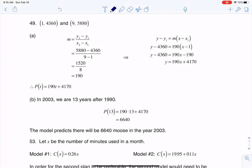and this is where we were told in 1991 there were 4,360 moose, and by 1999 the population of moose was 5,880.